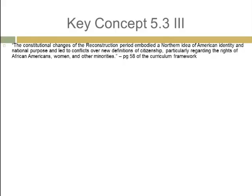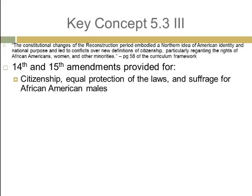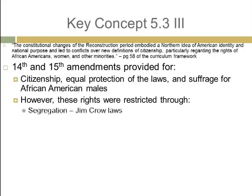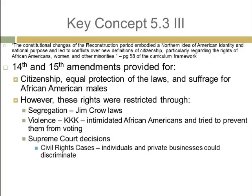Key Concept 5.3 Roman numeral 3: the constitutional changes of the Reconstruction period embodied a Northern idea of American identity and national purpose and led to conflicts over new definitions of citizenship, particularly regarding the rights of African Americans, women, and other minorities. The 14th and 15th Amendments — definitely know these — provided for citizenship, equal protection of the laws, and suffrage for African American males. However, these rights were restricted. Segregation, Jim Crow laws, and separate facilities began to develop. The KKK used violence to intimidate African Americans and prevent them from voting. Supreme Court decisions chipped away at equal protection laws — the Civil Rights Cases stated that individuals and private businesses could discriminate against other individuals, as long as it was not the government doing the discriminating.